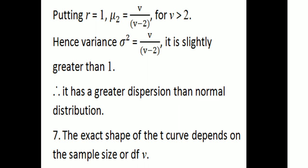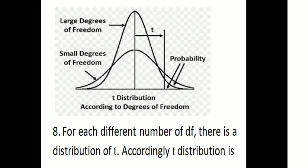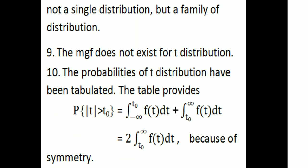The exact shape of the t curve depends on the sample size or degrees of freedom v. For small degrees of freedom v, the curve is flat-shaped. For large degrees of freedom v, it is well-shaped and approaches the normal curve. For each different number of degrees of freedom, there is a different t-distribution. Accordingly, the t-distribution is not a single distribution but a family of distributions.